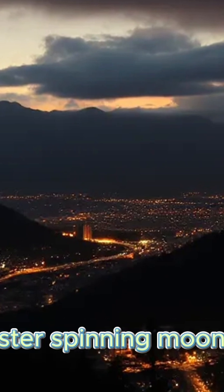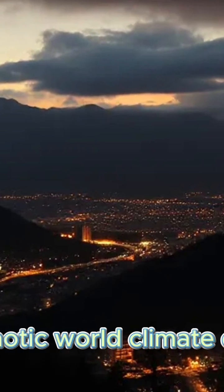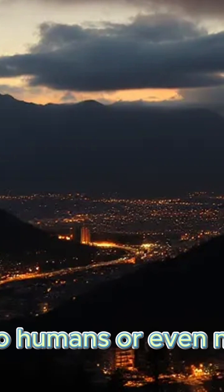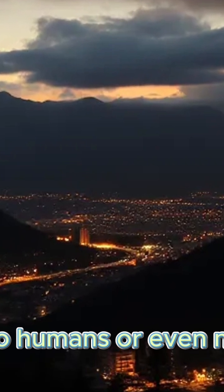What might Earth be like? A faster spinning, moonless, more chaotic world. Climate extremes. Unpredictable weather. Possibly no humans, or even no life at all, or life that looks very different.